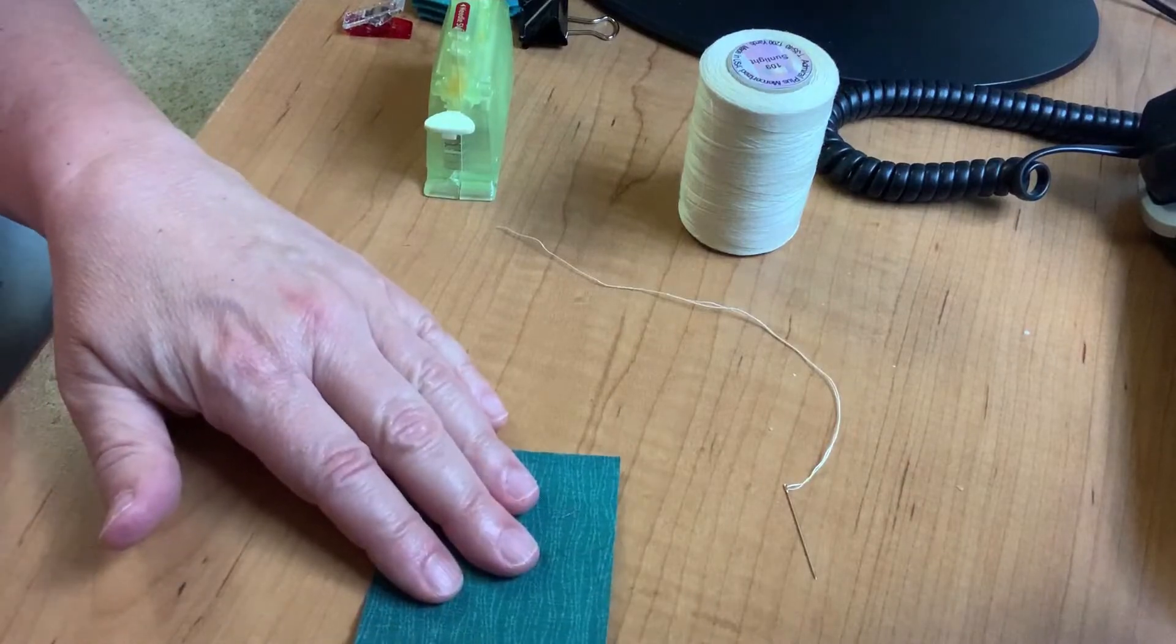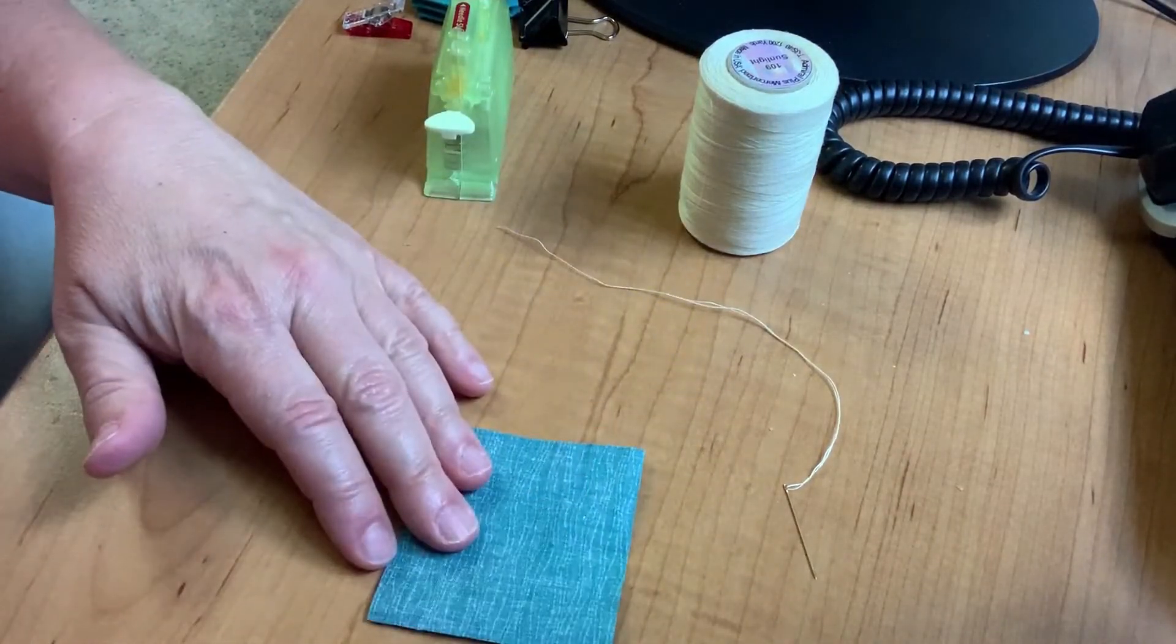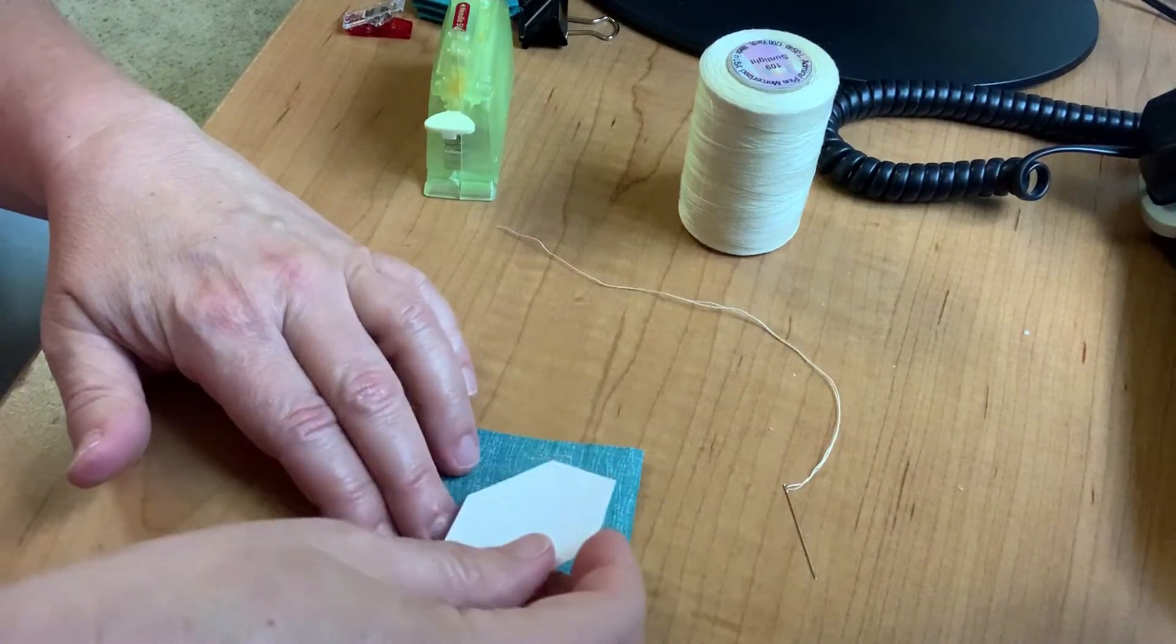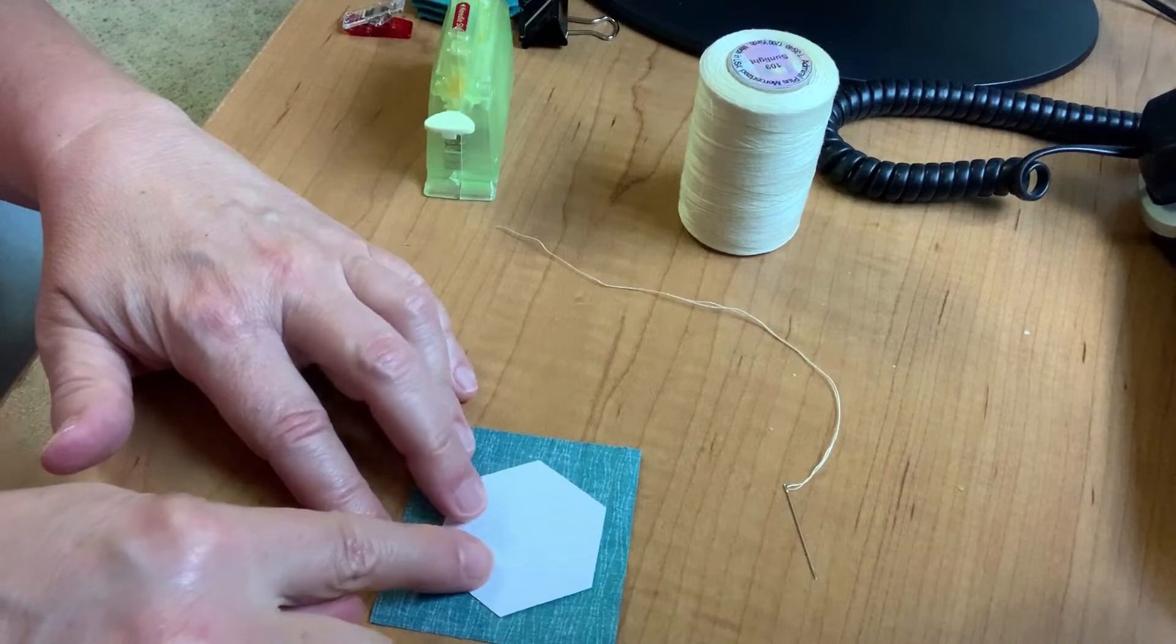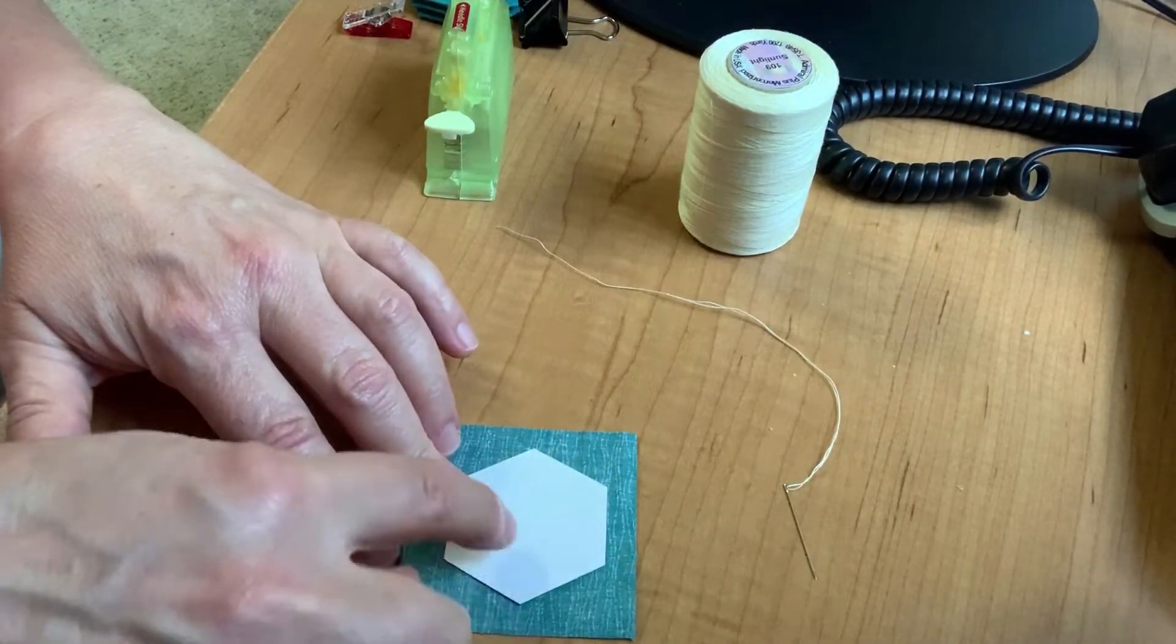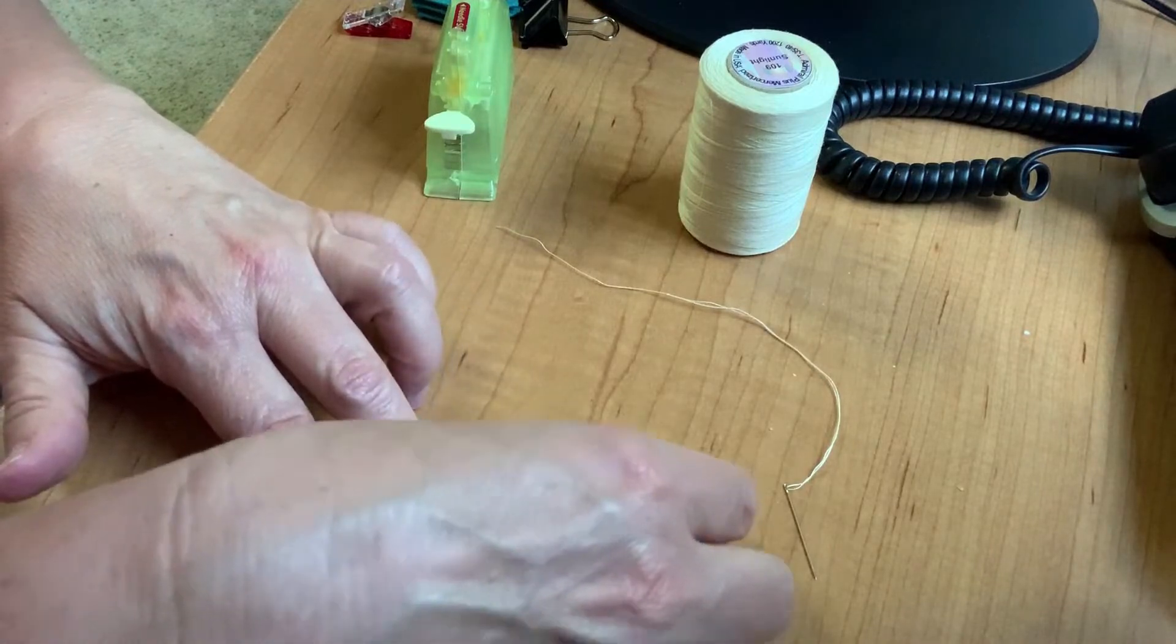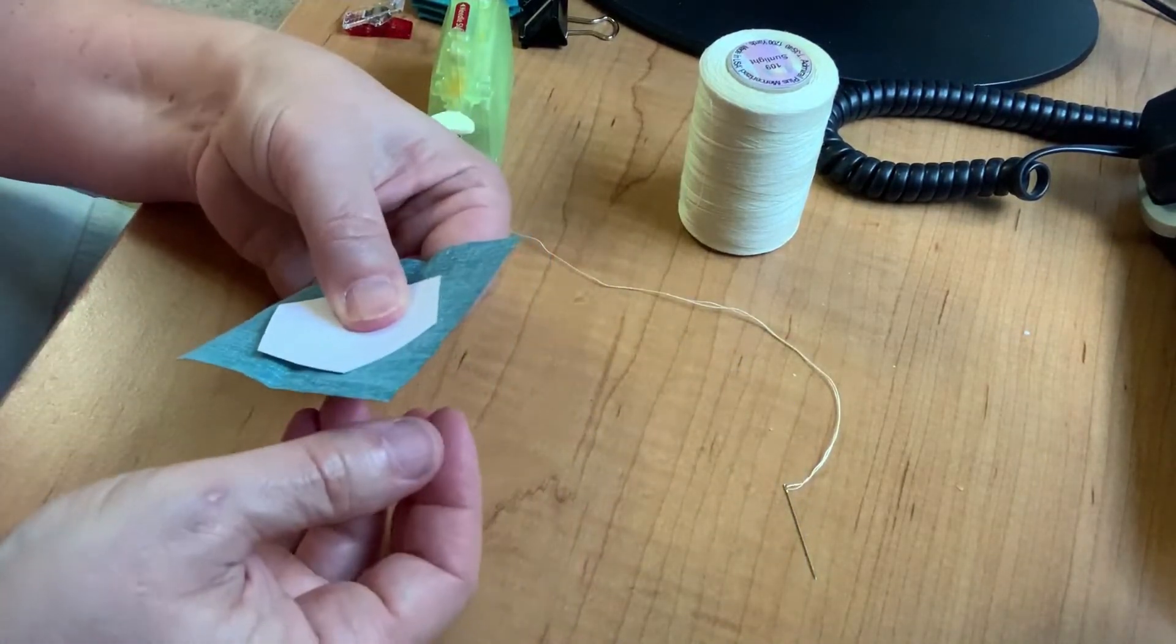I'm going to start with a 2 1⁄2 inch piece of the fabric and I want to put the wrong sides on top and then I'm going to take the hexagon template and center it. At the place where we've got the points facing the outside edge of the fabric, that's where I want to start.